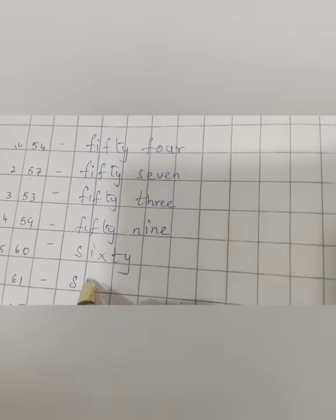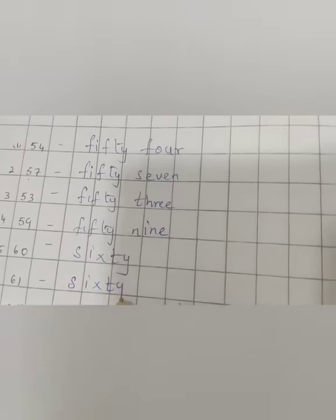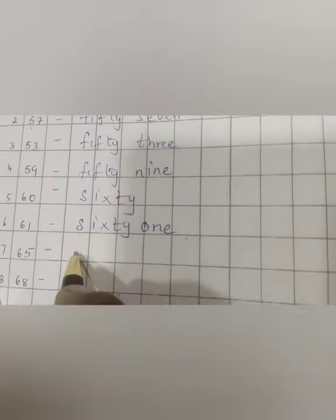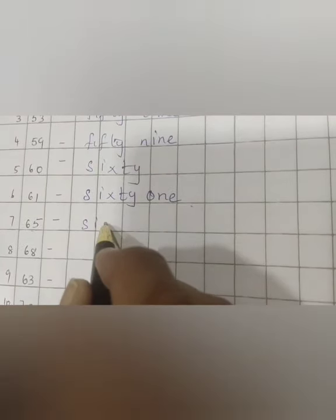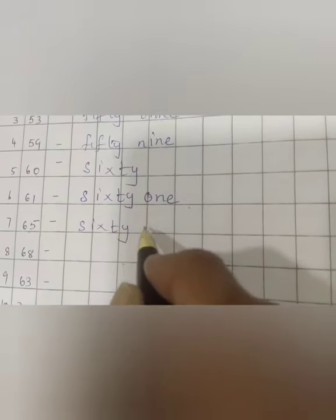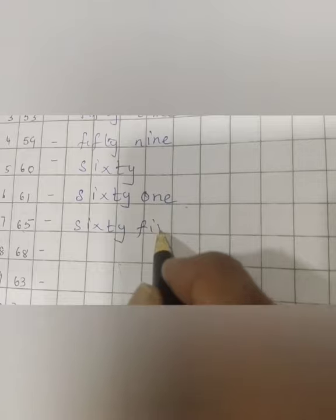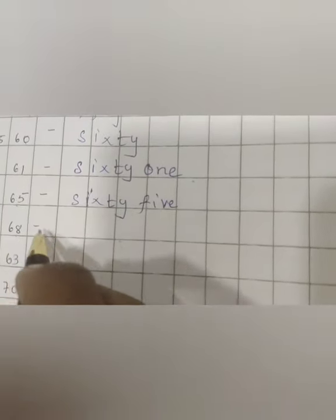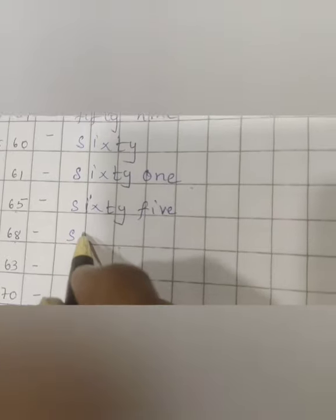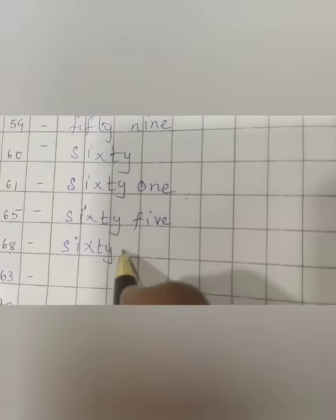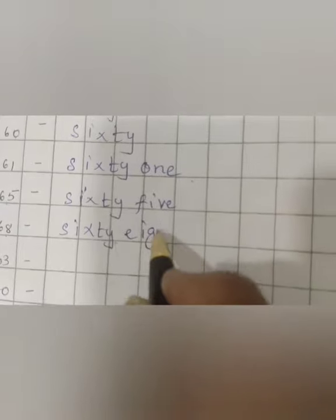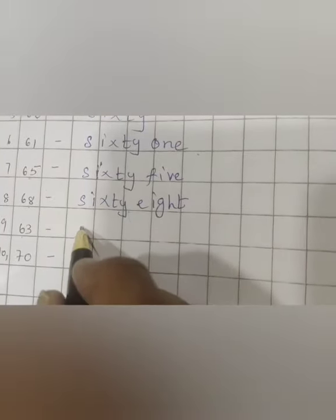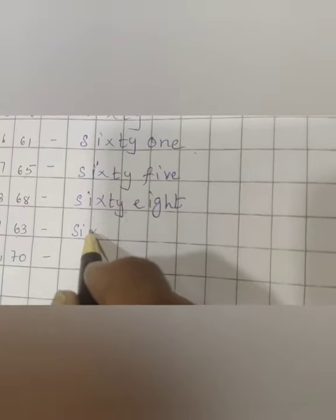What is the next number? 61. S-I-X-T-Y, 60, O-N-E, 1. 61. What is the next number? 65. S-I-X-T-Y, 60, F-I-V-E, 5. 65. What is the next number? 68. S-I-X-T-Y, 60, E-I-G-H-T, 8. 68. What is the next number? 63. S-I-X-T-Y, 60, T-H-R-E-E, 3. 63.